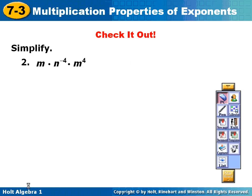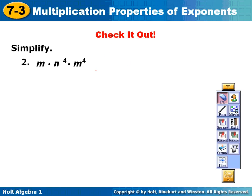Let's go on to number 2. We have n's and m's, we're going to do the m's together. m to the first and m to the fourth is m to the fifth times n to the negative 4. But you can't have a negative exponent, so I'm going to move the n to the fourth on the bottom. The final answer is m to the fifth over n to the fourth.